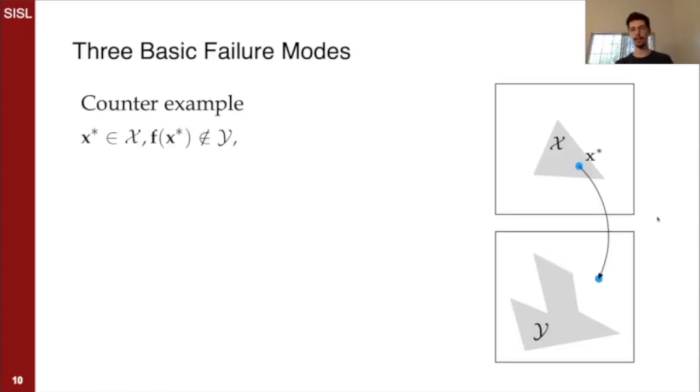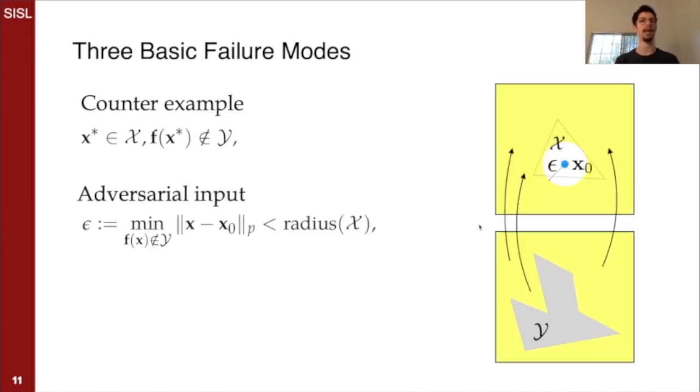There are three basic ways that a network can fail the verification test. The first is that we find a counter example. We find some point in the input set that maps to a point in the output space that is not in the output set, and therefore the property is violated. In other cases, we can map the output set backwards and find that there is a radius in the input set which violates the property.